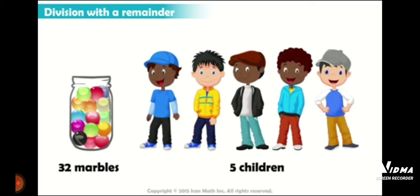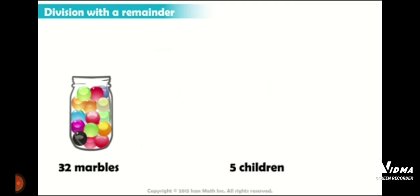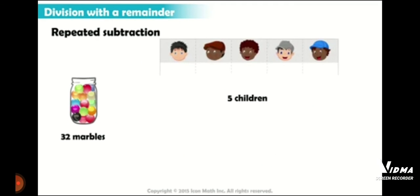Now we will take another example. This time we are left with a remainder also. 32 same marbles, but now Ziyan is having 4 of his friends and the total number of children are 5.